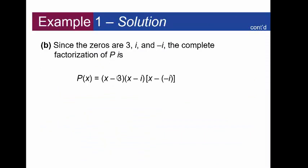So I put x minus the positive 3 I have, x minus the positive i, and x minus minus the i I found. This double negative will become positive, and this right here is the complete factorization of this polynomial.